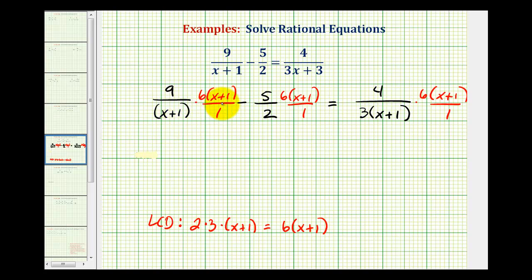Before we simplify and solve this, we should take a moment to list the excluded values, or the values that x can never be. Since we can never divide by 0, we know x can never equal negative 1. So our excluded value is x cannot equal negative 1. If when solving this equation we get a solution of x equals negative 1, we must exclude it.